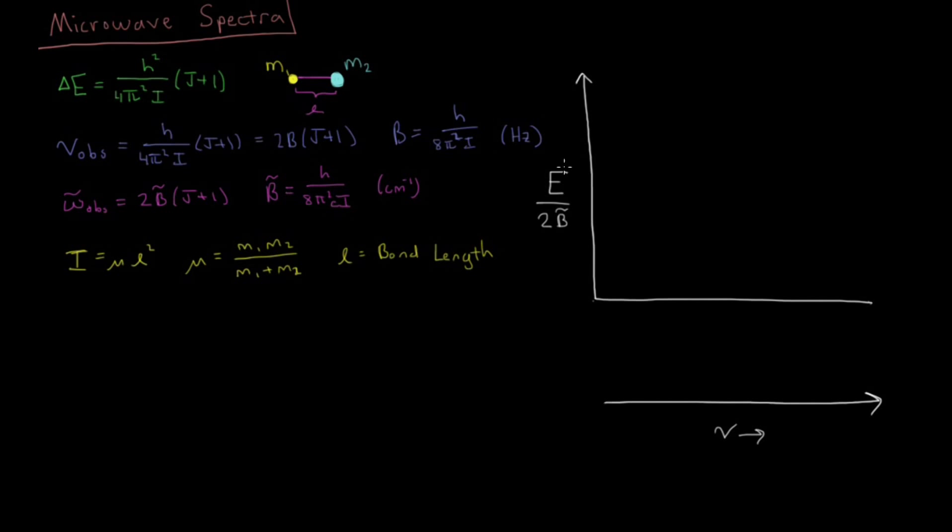And if we want to put this instead of in hertz cycles per second, inverse seconds, we want to put that into inverse centimeters, we can do that as well simply by dividing by the speed of light. So we go from b to b bar by adding in a speed of light in there, and you would want that in centimeters per second if you want in inverse centimeters, as wave numbers are often expressed in, giving us this 2b bar times j plus 1 for the separation between the energy levels.